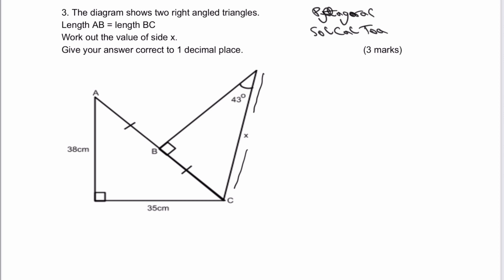In order to do that, we're going to need to know the length BC. But very handily, BC is actually half of AC, which is the larger triangle.